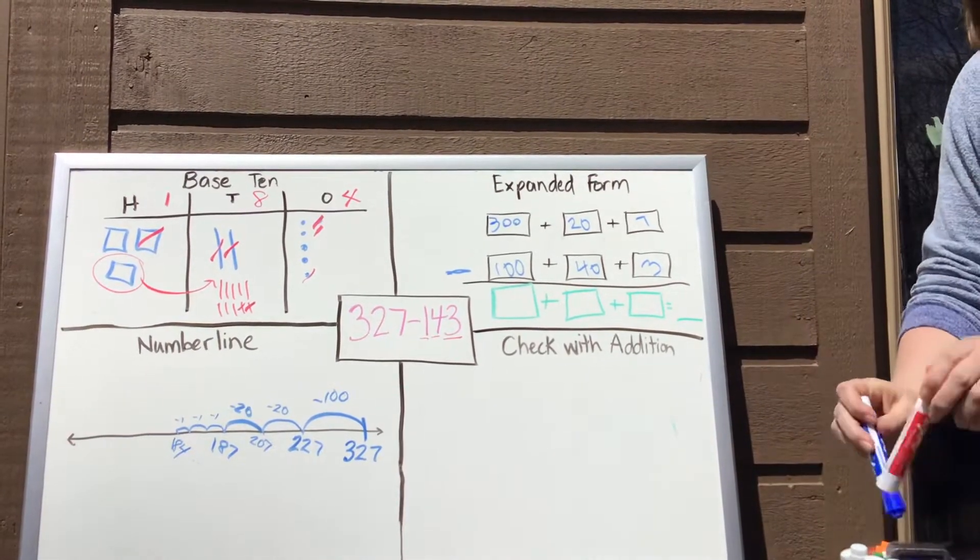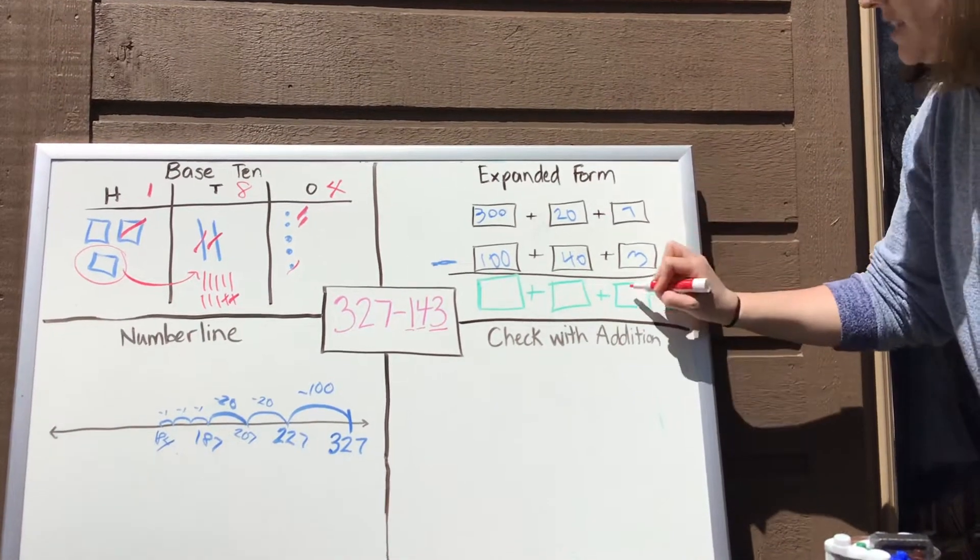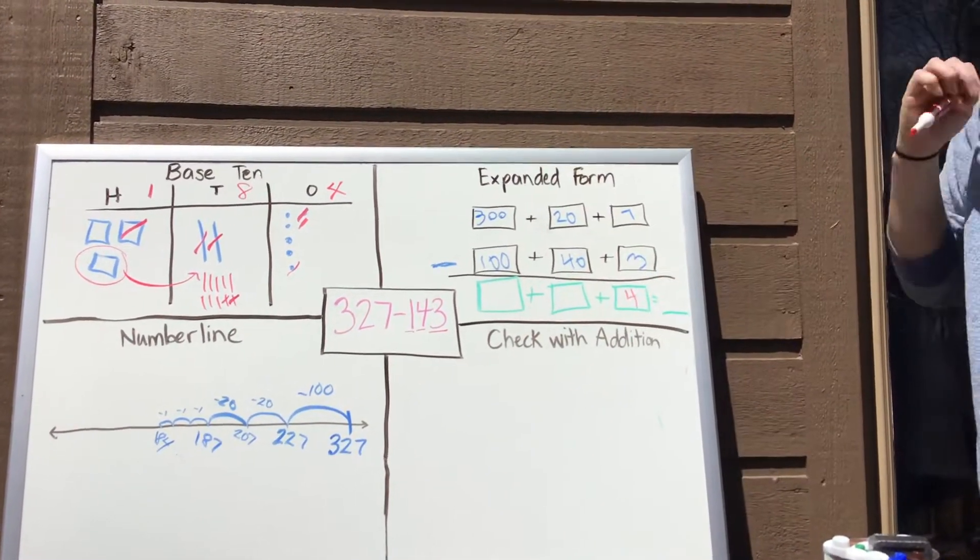All right. So now we're going to do some subtracting. So we're going to start with 7 minus 3. So 7 ones minus 3 ones. And that's going to get us to 4 ones.